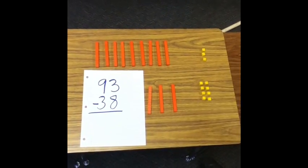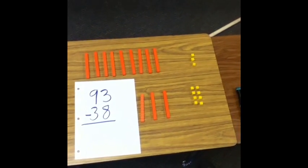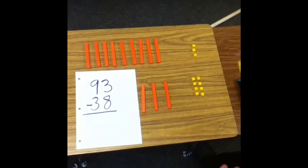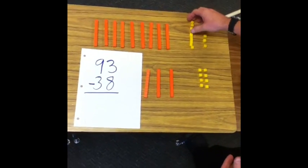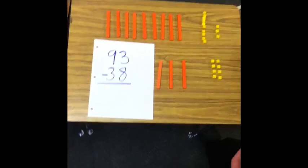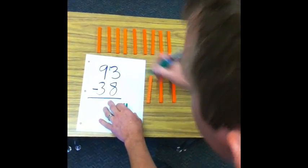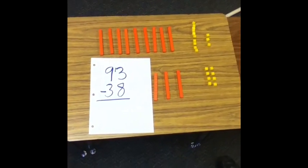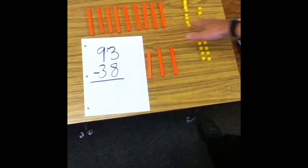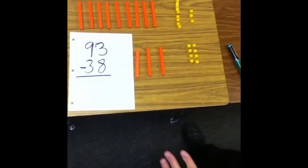So what I'm going to do is give the 93 a 10. So I'm going to give it 10 ones. And then on my paper, the way I record that is I put a little 1 here by the 3. So it's really 90 and 13.